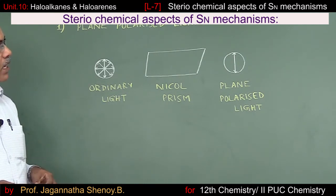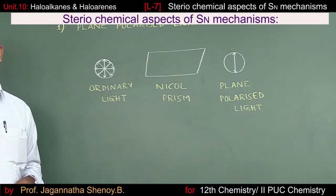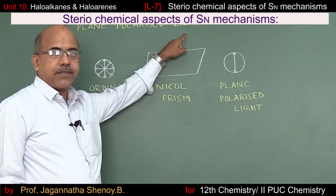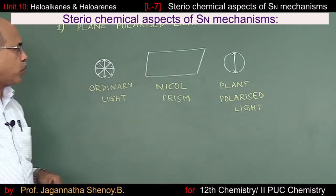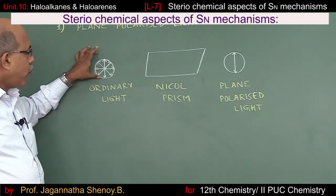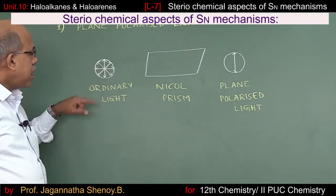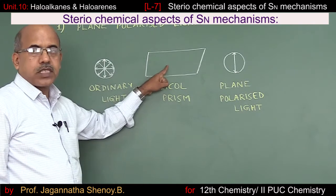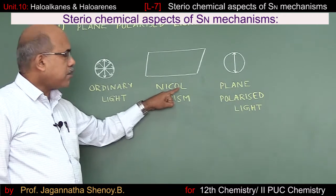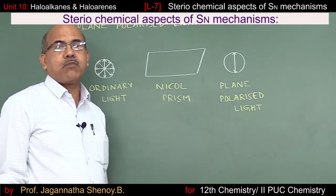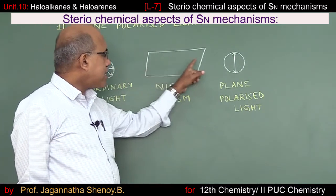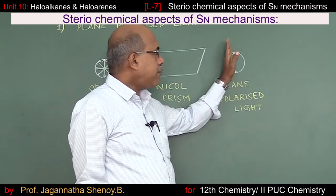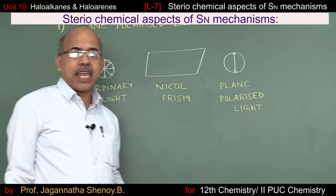Before discussing the stereochemical aspects, we need to be clear with certain terminologies. The first is plane polarized light. In ordinary light, vibrations occur in all possible directions perpendicular to the direction of propagation. When this ordinary light is passed through certain crystals like a Nicol prism — made of calcite, a crystalline modification of calcium carbonate — the emerging light has all its vibrations confined to one particular plane, and this is called plane polarized light.